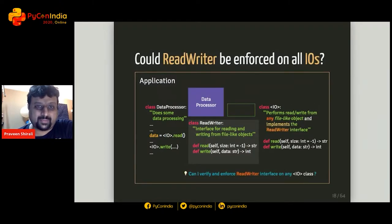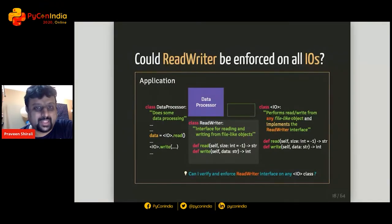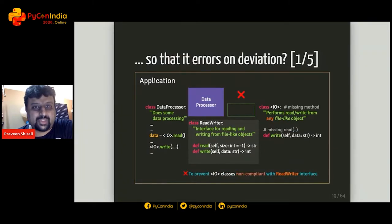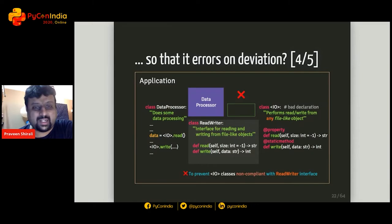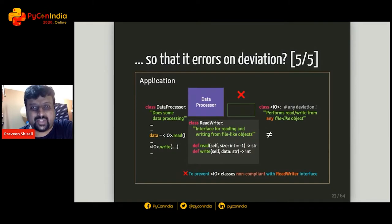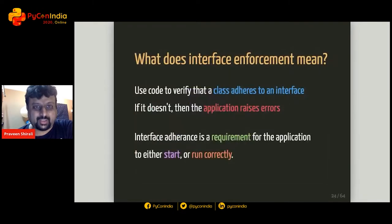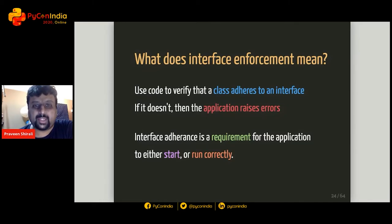Could we detect and verify interface deviation automatically, so we don't leave this to chance? Can we write code to enforce that implementations like FileIO and MemIO must implement methods as per spec — as defined by the ReadWriter interface? If we can do that, we can detect missing methods, wrong arguments, misspelled method names, and bad declarations. We don't have to test for such deviations specifically — we just have code in our application to do that for us. That is what interface enforcement means.